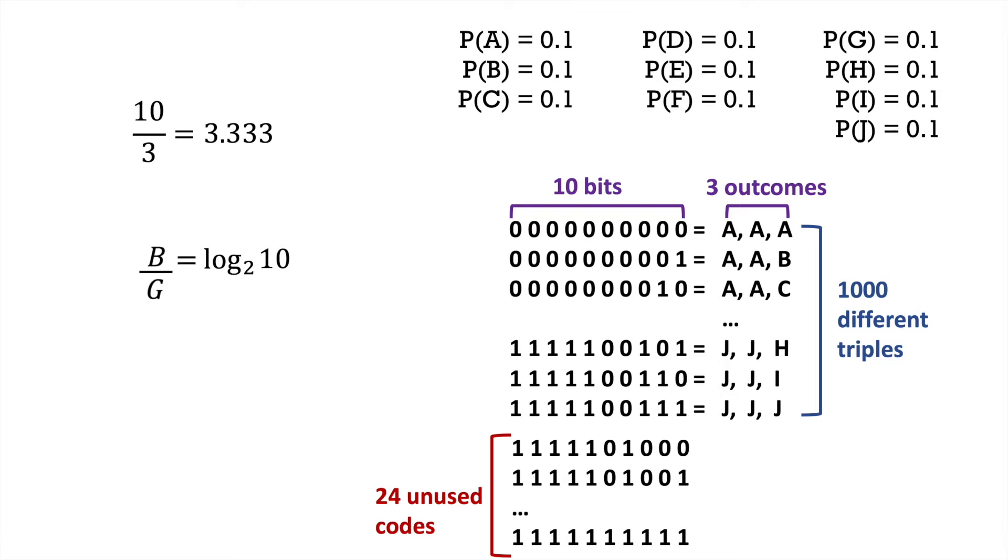Also, log base 2 of 10 is 3.32, which is very similar to our 3.333 estimate. Let's return back to the discussion of entropy.